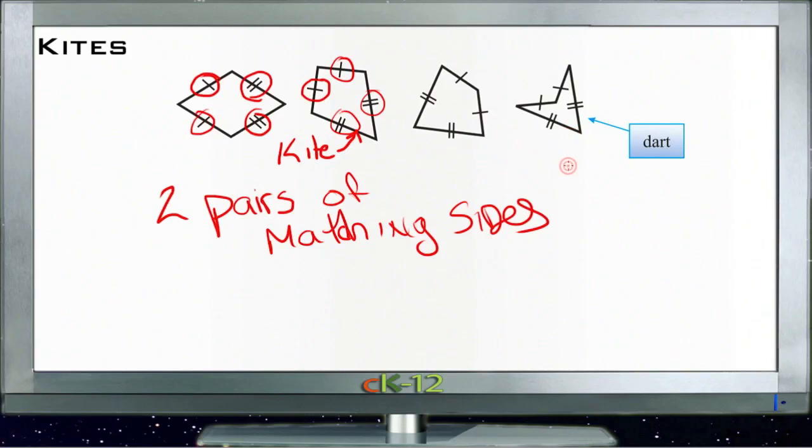A kite also can have one convex pair of angles, where it sort of punches in like that. Although, if that's the case, it's technically considered a dart, sort of a subclass of kite.